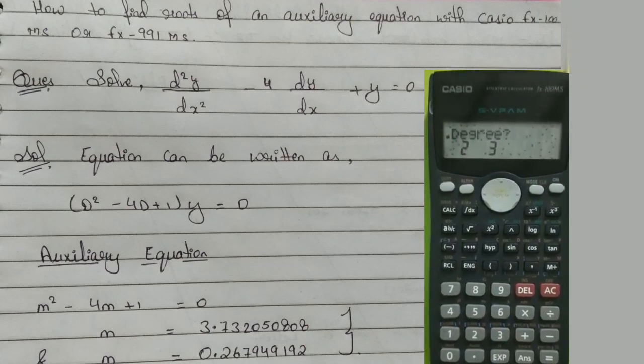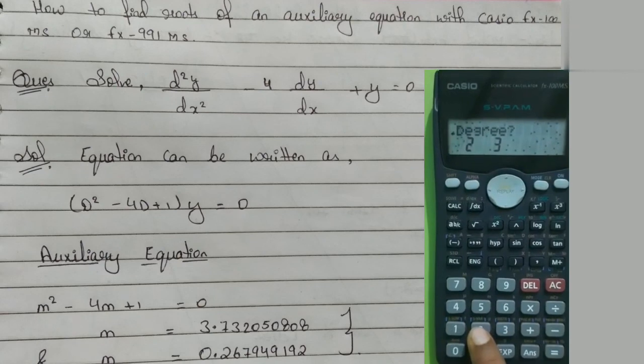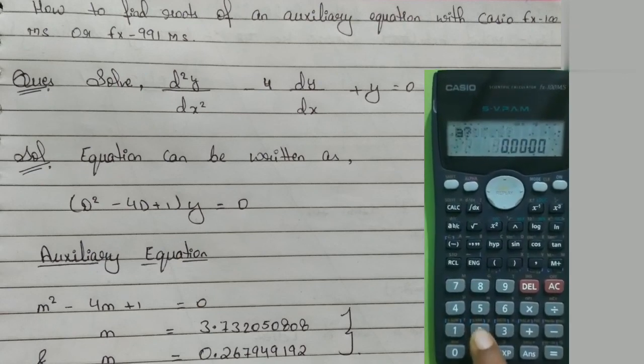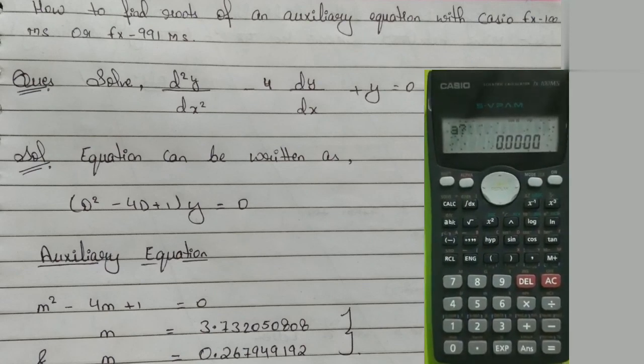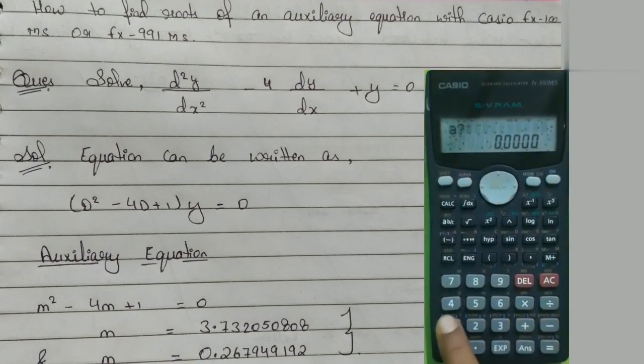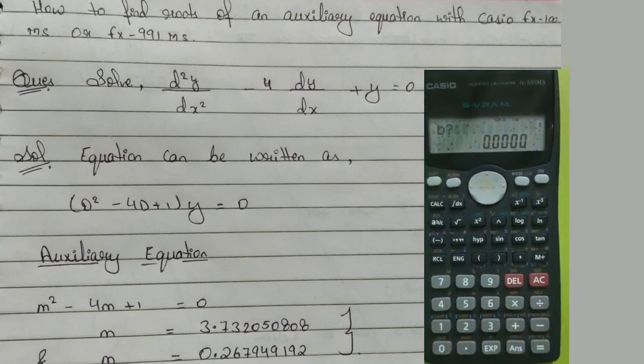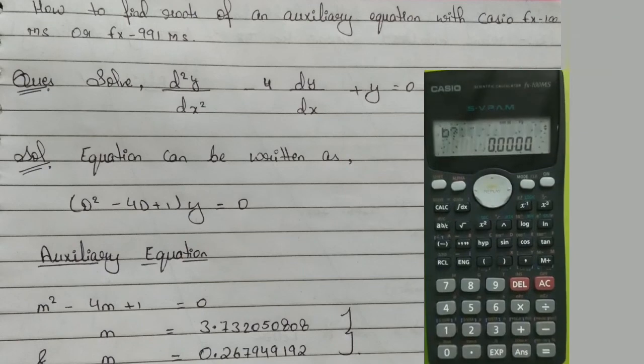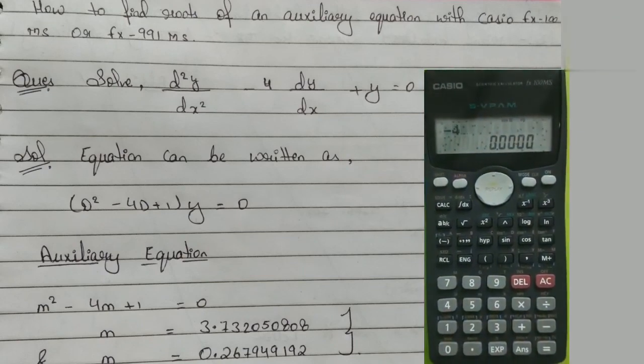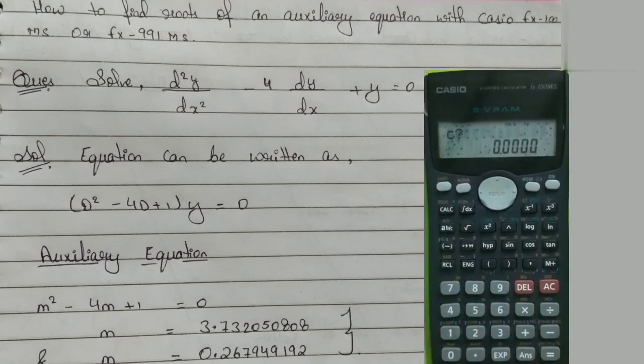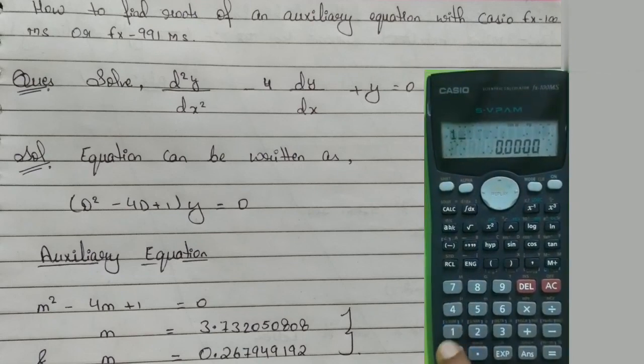On the calculator, we select degree 2 for the equation. We enter the coefficient values: a, then the calculator prompts for the next values. We enter c value as 1, then press equal.